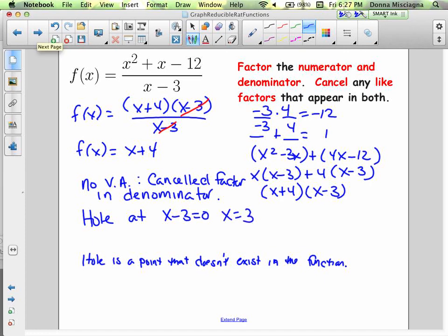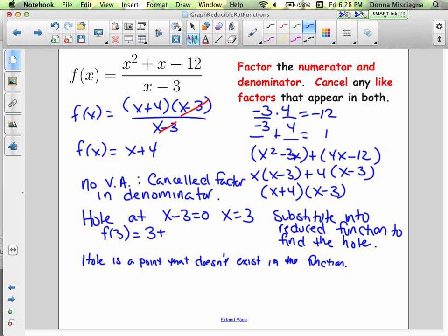So that means we have a hole at x minus 3 equals 0, or x equals 3. We need the y-coordinate. We're going to plug it into the reduced function. So we're going to substitute into the reduced function to find the hole. So if I plug in 3, f of 3 is equal to 3 plus 4, or 7. So that means we have a hole at 3, 7. That just doesn't exist in our function.